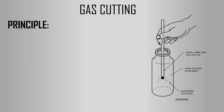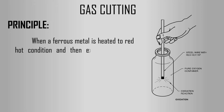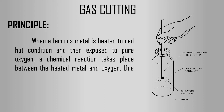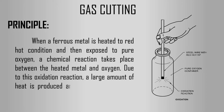Let's see the principle of gas cutting. When a ferrous metal is heated to red-hot condition and then exposed to pure oxygen, a chemical reaction takes place between the heated metal and oxygen. Due to this oxidation reaction, a large amount of heat is produced and cutting action takes place.